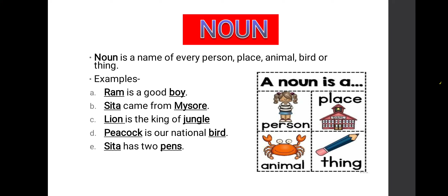In that sentence we can see another word, that is boy. Boy is also the name of a person, so it will also become a noun. Ram and boy both indicate the name of a person, so they will become nouns. Second example: Sita came from Mysore. Sita is a name of a person; Mysore is a name of a place. So both will become nouns. Sita and Mysore are nouns in this sentence.